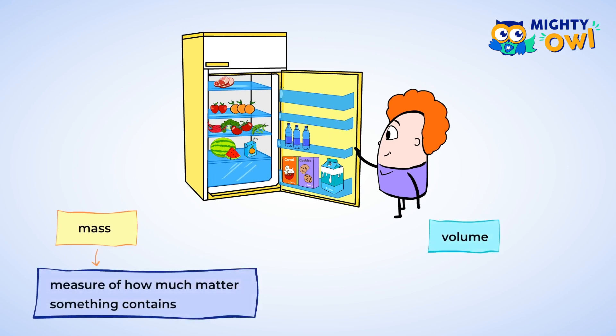These are measurements for mass or volume. Mass is the measure of how much matter or stuff something contains. Volume is the measure of liquid a container holds. Let's look at some of these measurements and where you might see them.